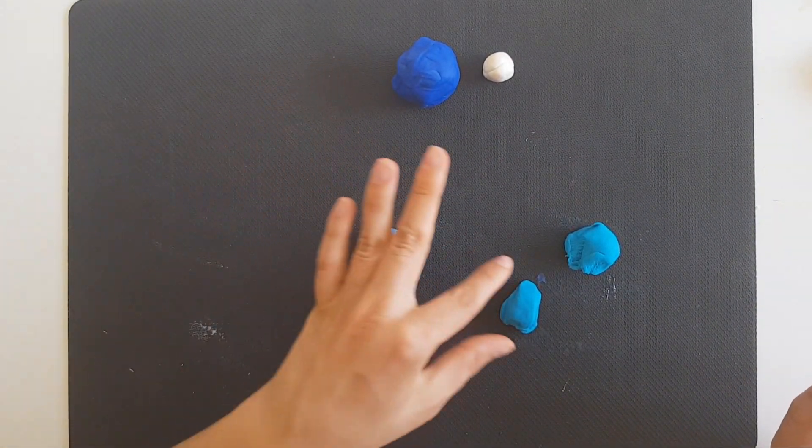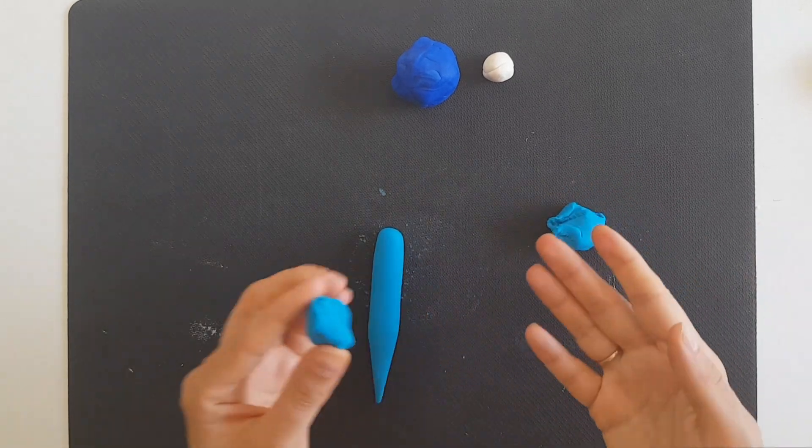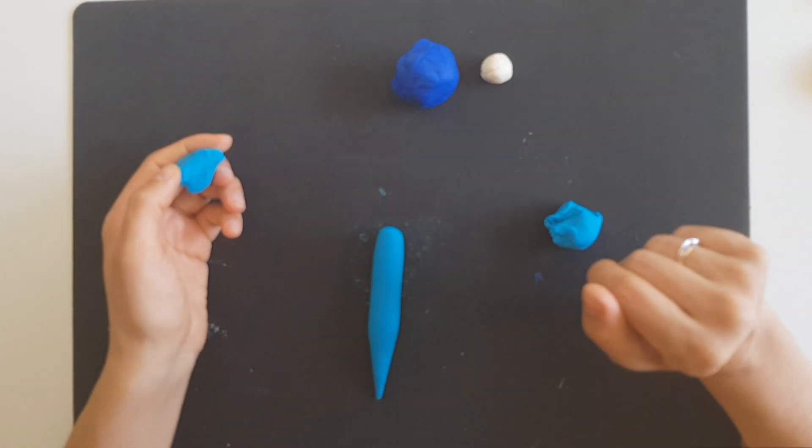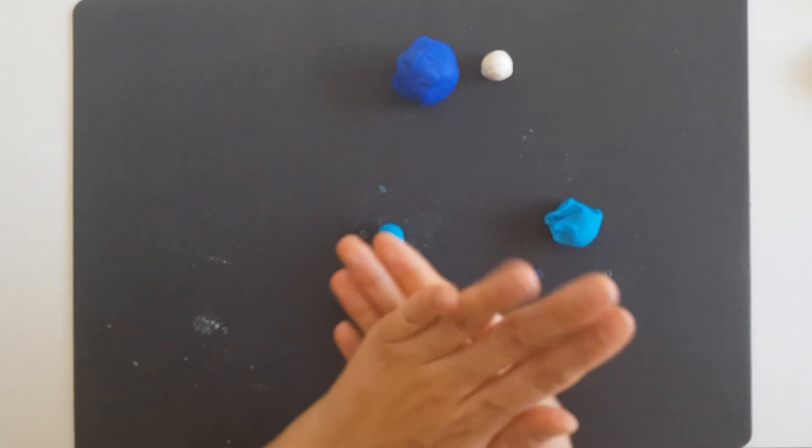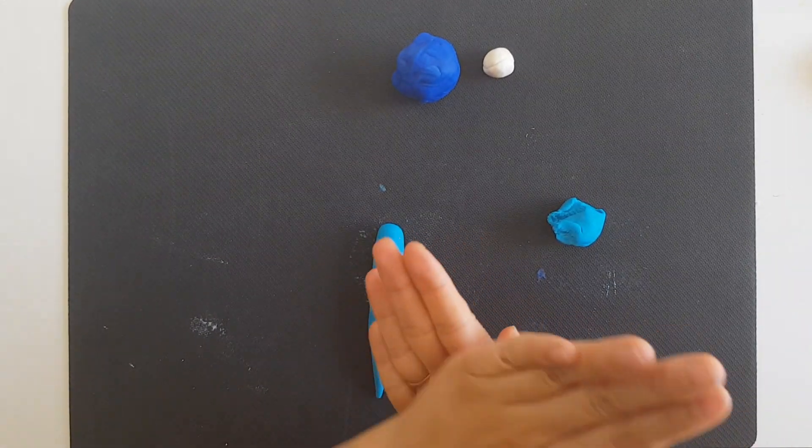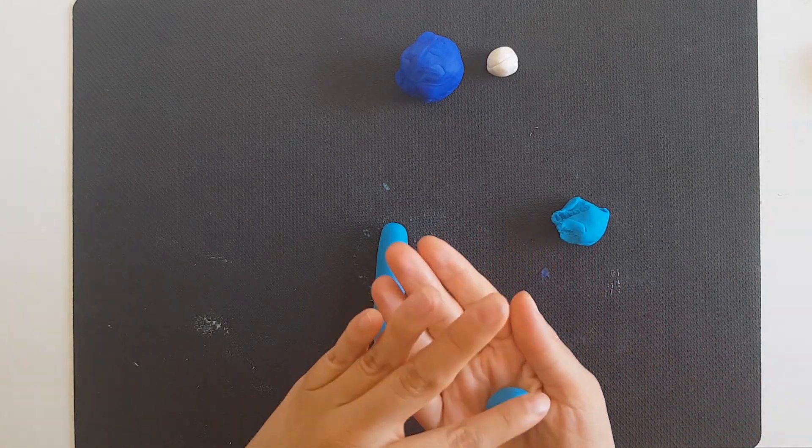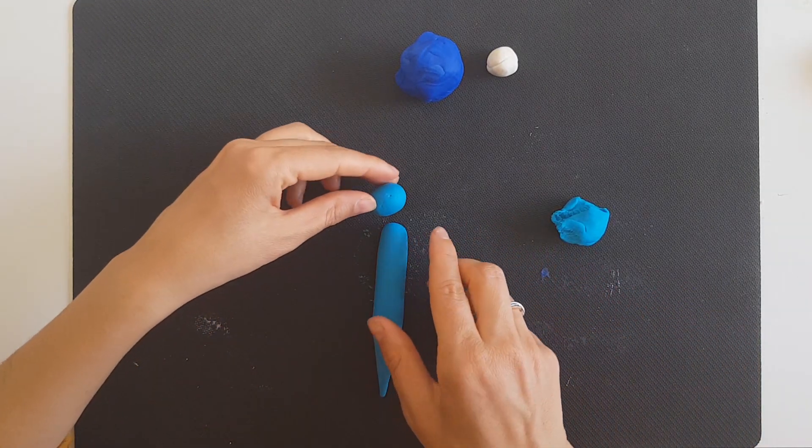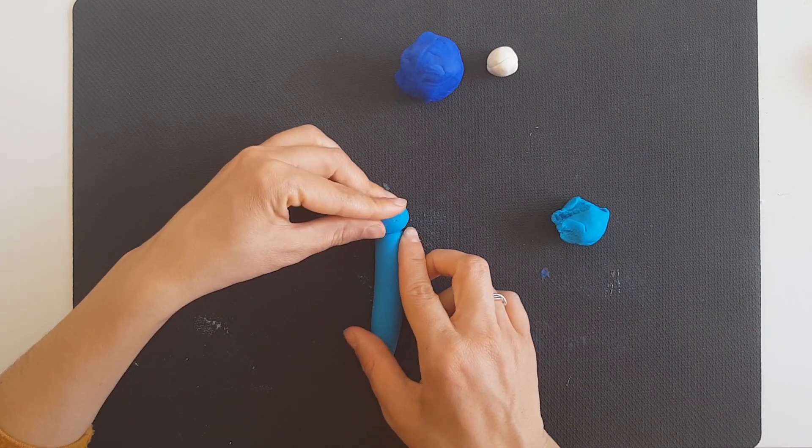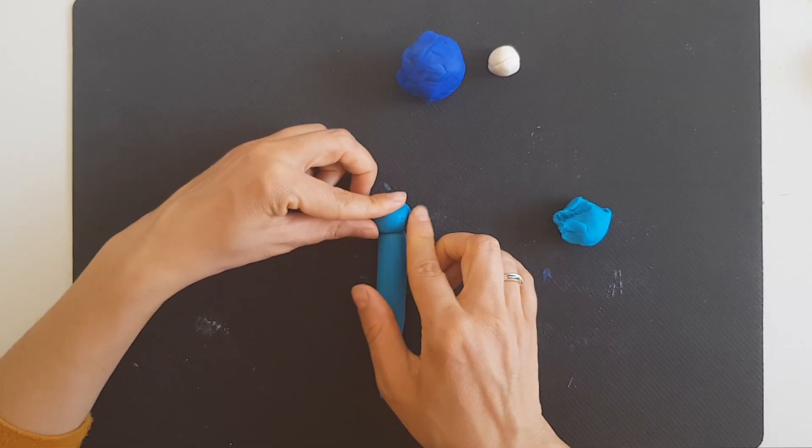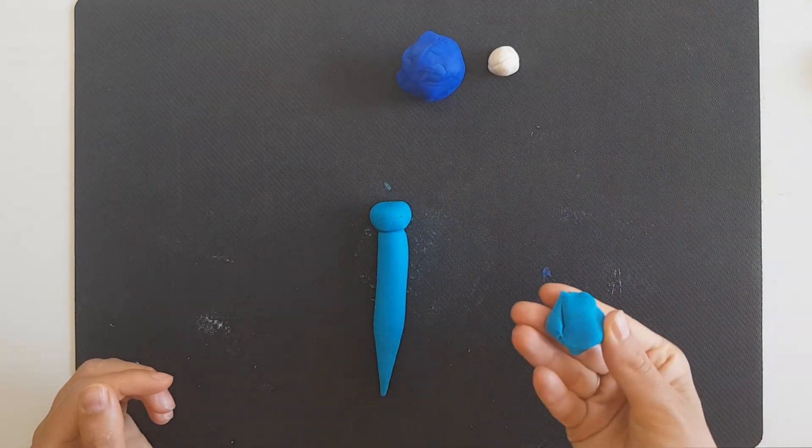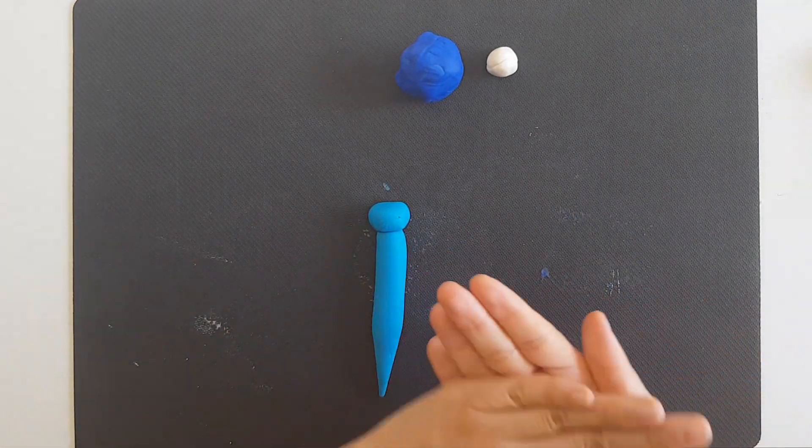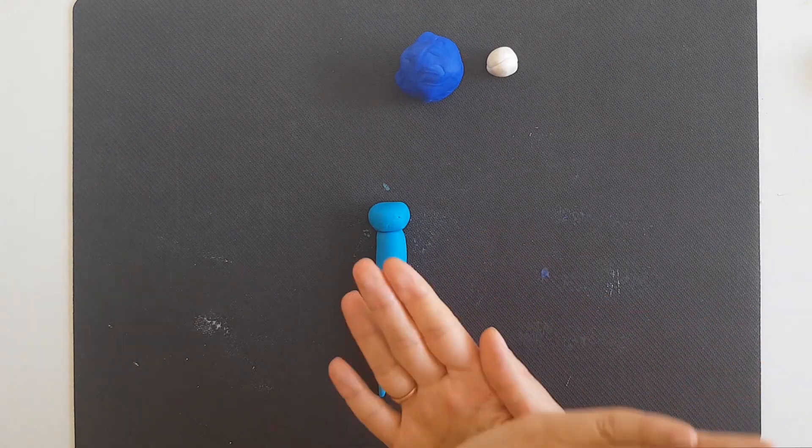Now I will put the other part for my dragonfly. I will roll it again. And when we have this nice ball, let's attach it to the body part. Let's now roll the other one as well and make a nice ball again.